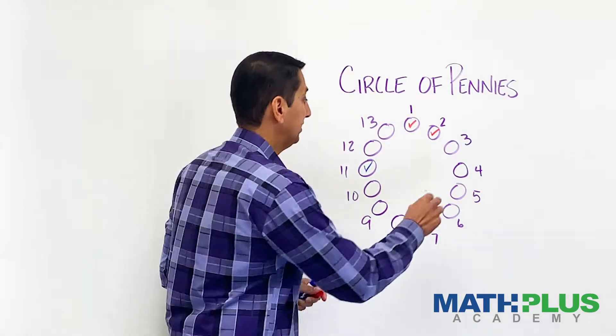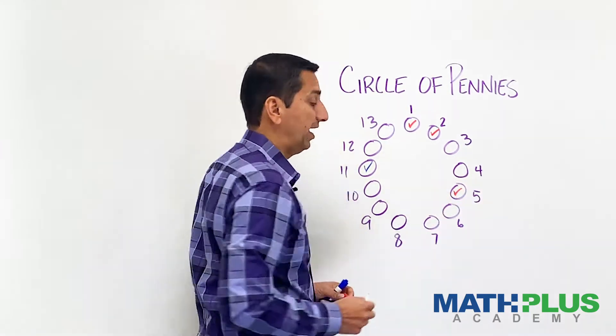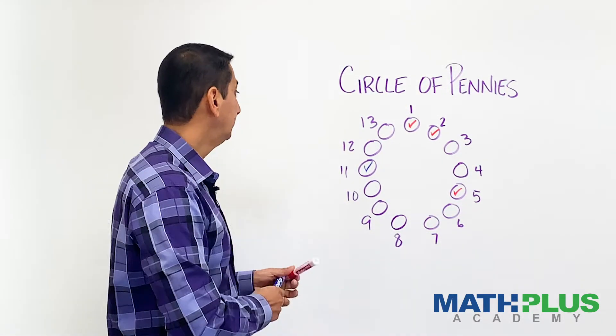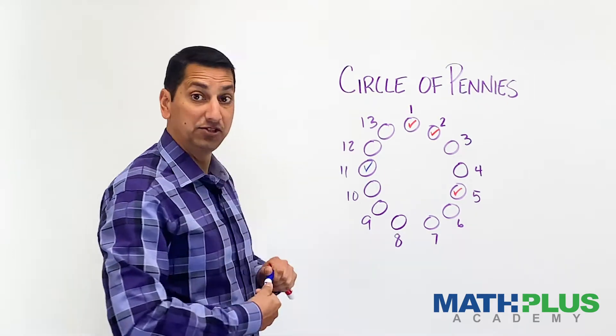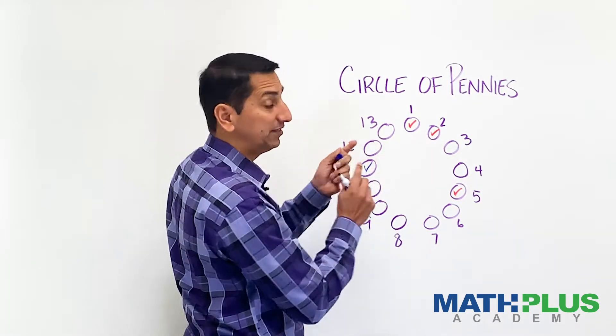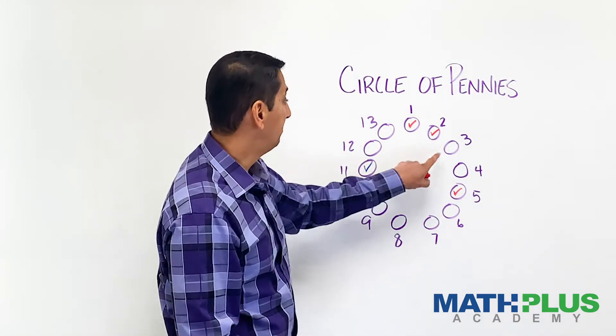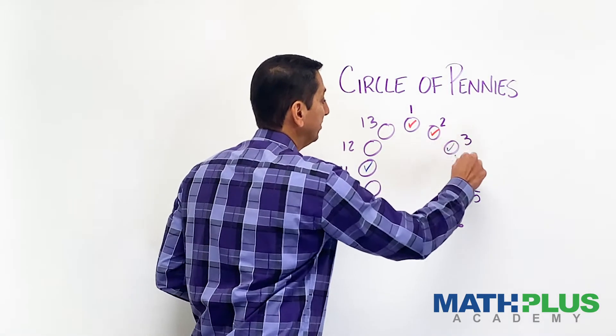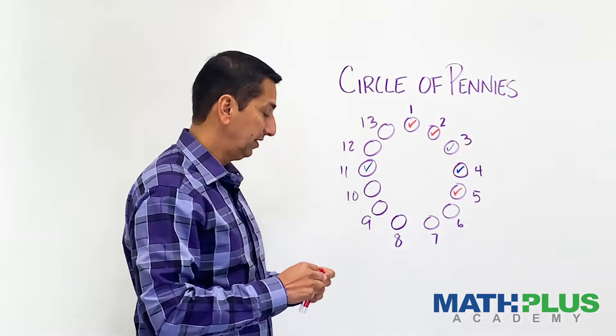Player one's turn. Maybe they take one from there. Player two decides to take two, and of course they can't take two from different places. They have to take two that are adjacent, so maybe player two goes over here and takes these two right there. Excellent.